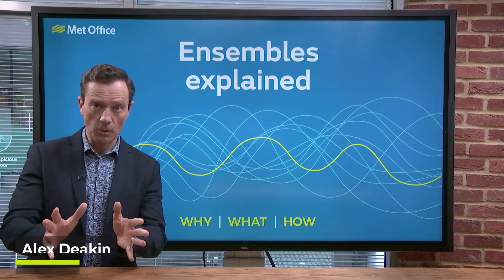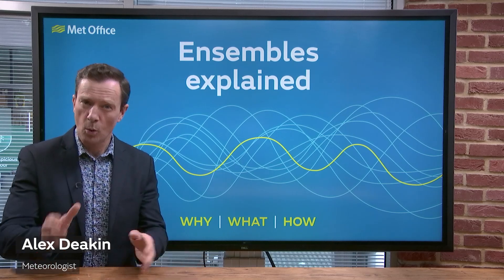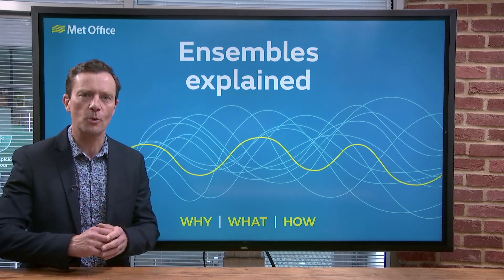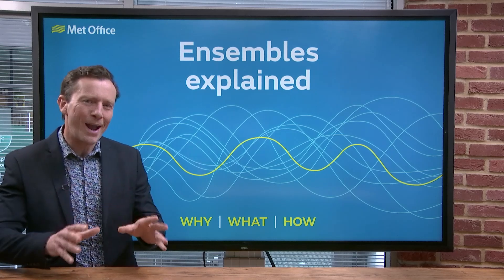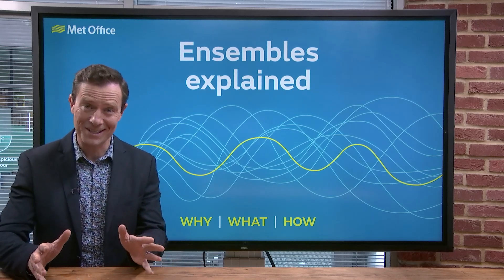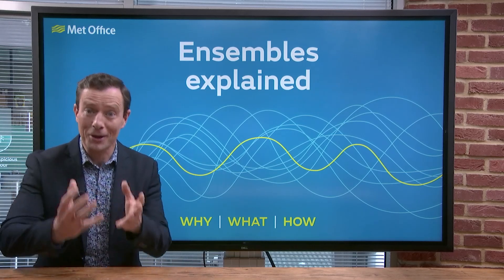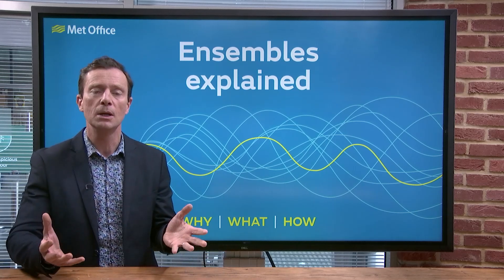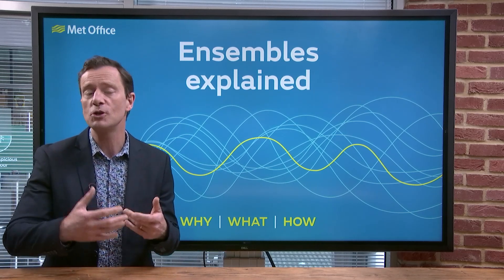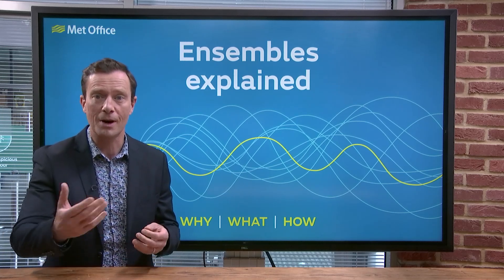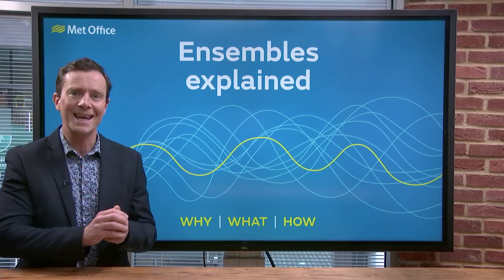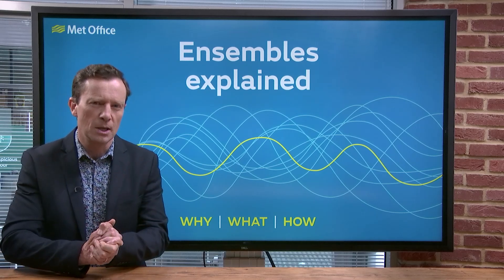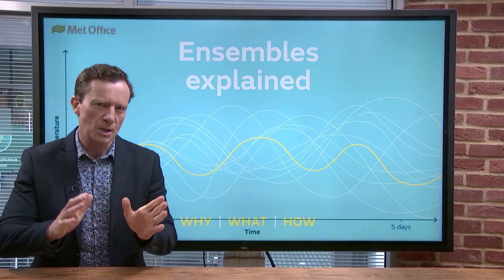In this part we'll be answering the question: what are ensembles, and how are they different from other weather forecasts? The way forecasts have been done for years is you get as much information about the current weather situation as possible, plug that into a computer model, and based on the laws of physics it gives you a prediction of the future atmosphere. This is called a deterministic forecast.